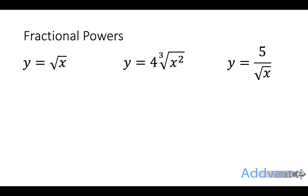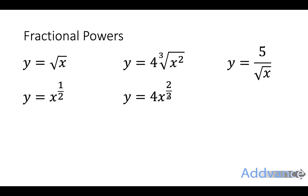Next is fractional powers, and a fractional power is like a root. For example, y equals the square root of x is the same as x to the power half. Y equals 4 times the cube root of x squared is the same as 4x to the power 2 thirds — the denominator is 3 because it's a cube root, and the power is 2. And a divide by the square root of x is x to the power minus a half — the minus is because it's divide, and the half is because it's rooting. Now we have all of these as powers of x, so now we can differentiate.